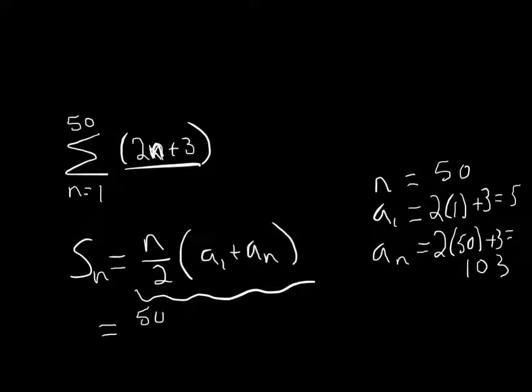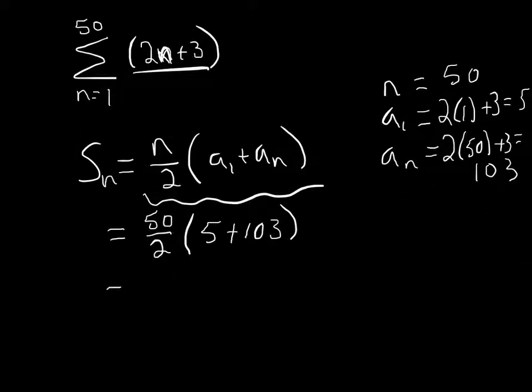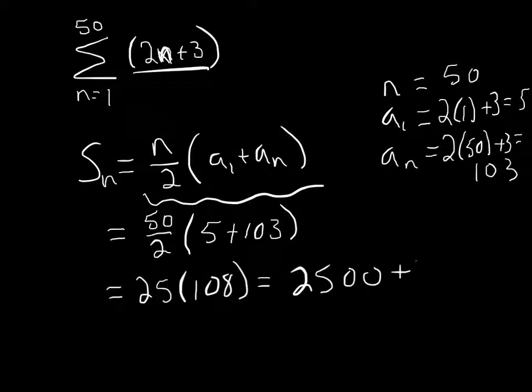So I have 50 over 2 times the first term, 5, plus the last term, 103. And simplify that. So I have 25 times 108. So 25 times 100, that's going to be 2,500. 25 times 8, that's 200. So that would be 2,700.